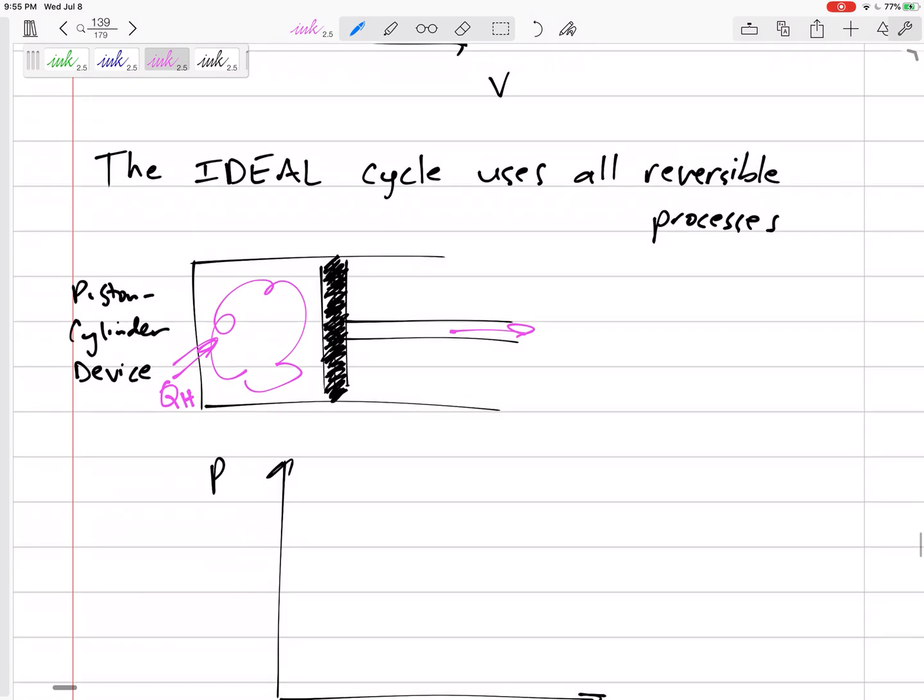So piston cylinder device. Expansion is our work out. Expansion is when this hot fluid expands this, pushes this against this, then we can get some work out of that.